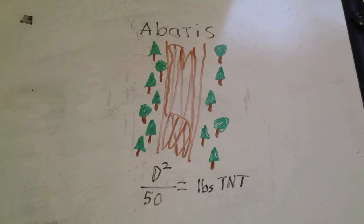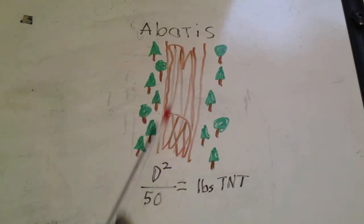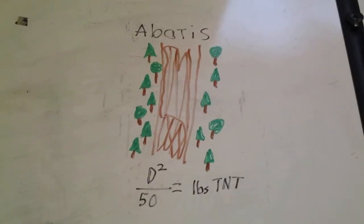Each tree must have a minimum diameter of 24 inches or 60 centimeters. Charges are placed at a 45 degree angle towards the enemy and five feet off the ground. Trees should fall at a 45 degree angle towards the enemy with trees still attached to the stump.